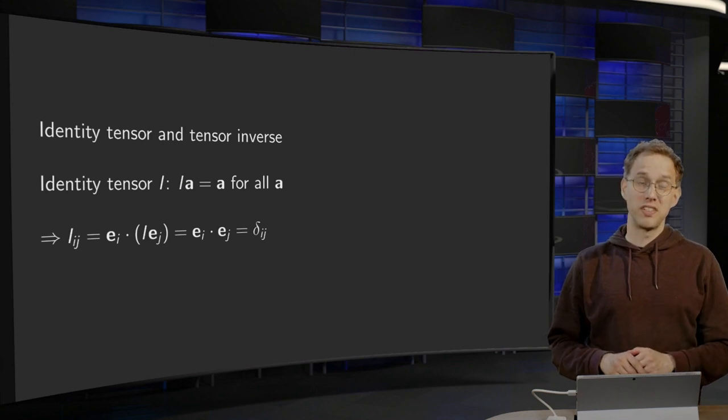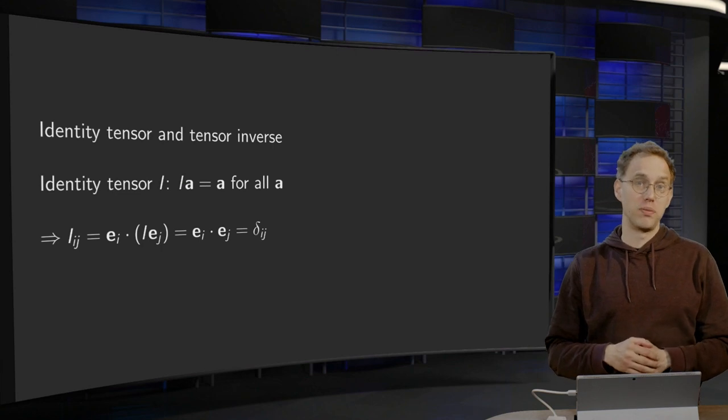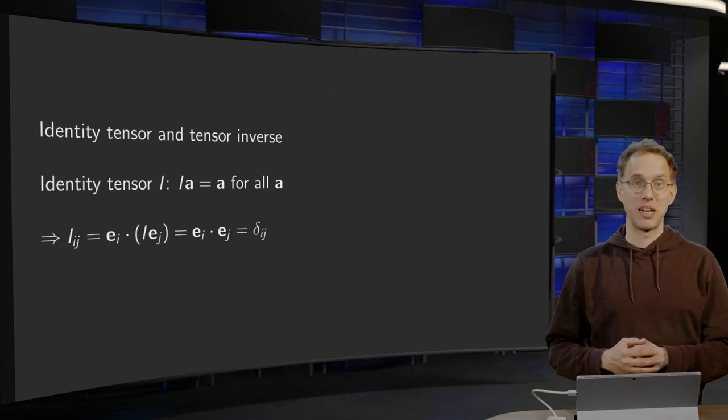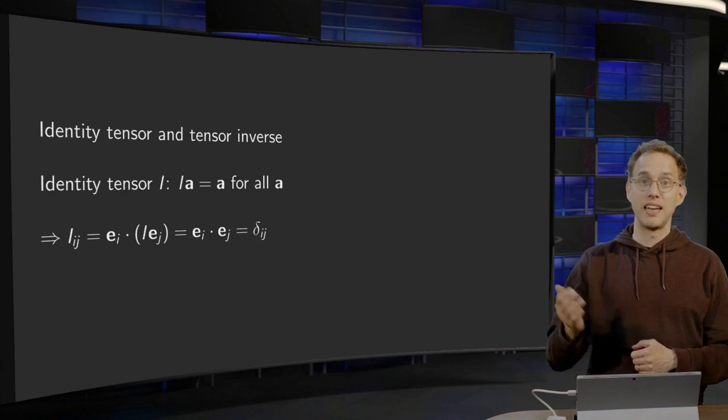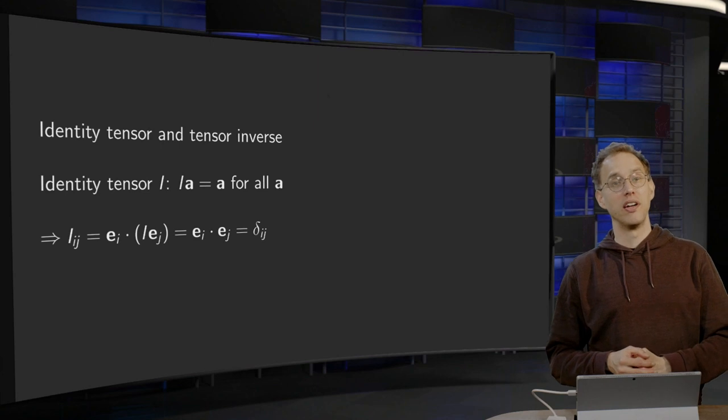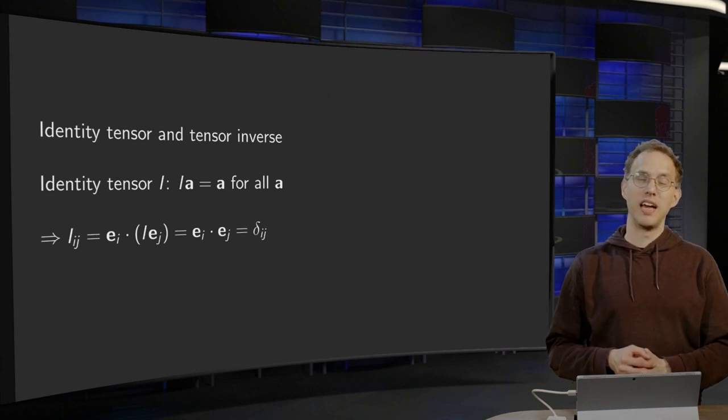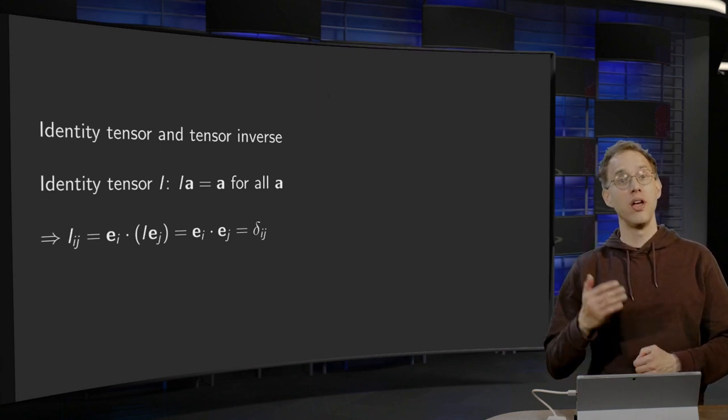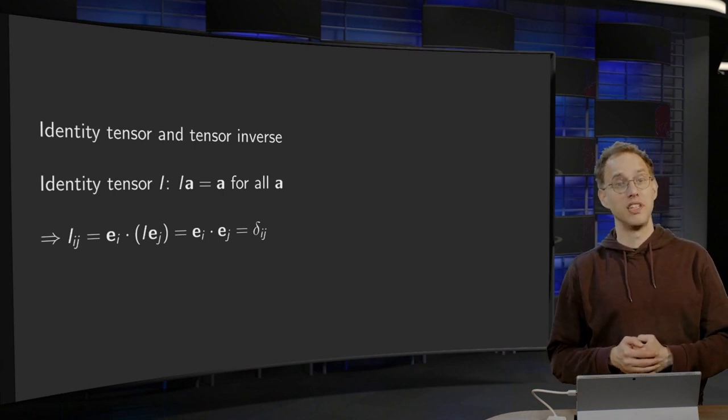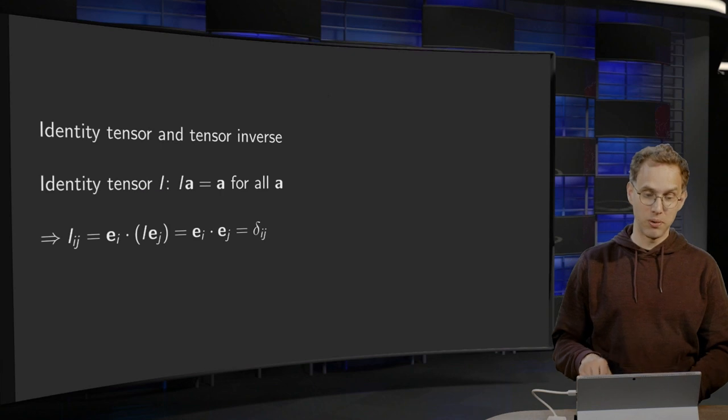Sometimes the definition of tensor properties is a bit tricky. Think, for example, of the transpose and the trace, because we do not want to rely on the matrix representation. In the case of the identity tensor and the tensor inverse, however, the definition is straightforward. Furthermore, we will also take a look into the similarity with linear algebra.